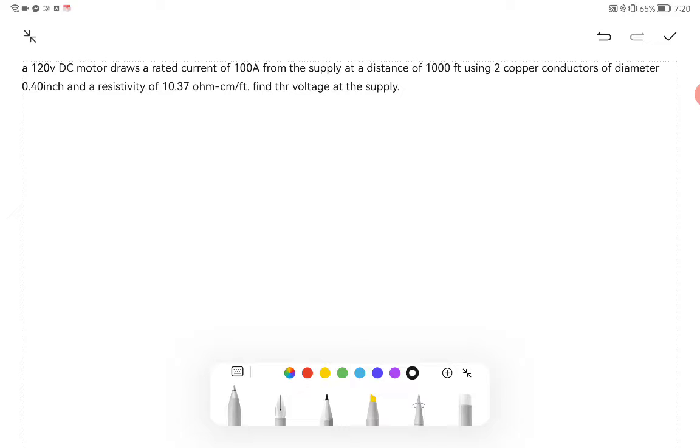So first we will write our given values. We are given the voltage of 120V, a current of 100 ampere, and a distance of 1000 feet. But we are using two copper conductors so it will be multiplied by two, giving us 2000 feet.